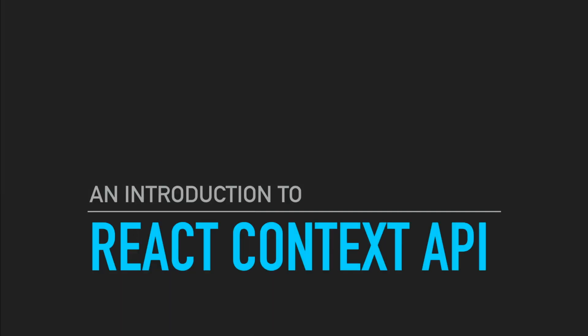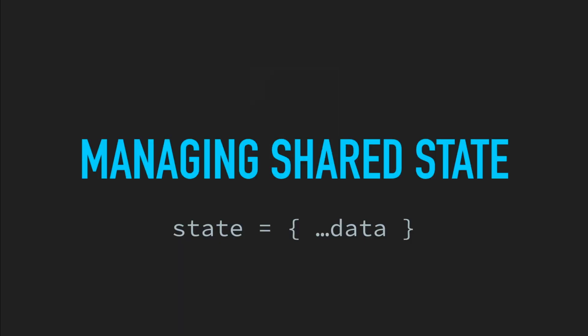So tonight we'll be going over Context API. But what's the reason — why do we reach out for something like Context API? It all comes down to sharing states. We have a situation we face when you start using React where you have a lot of components you start to build, and then you want to share some properties between those components.